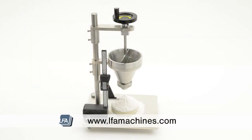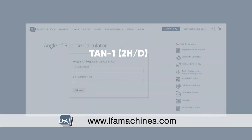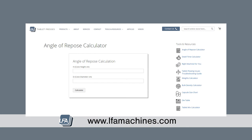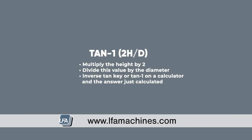The tangent of the angle of repose in degrees can be determined by reading off the height of the powder cone in millimeters from the digital display. Here is the calculation to determine the angle of repose — however, LFA also has a calculator on their website to do the math for you, linked below. The formula is: tan⁻¹(2h / d), where h is the height of the pile and d is the diameter.